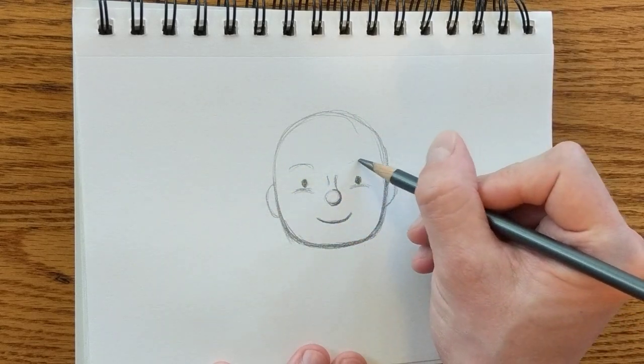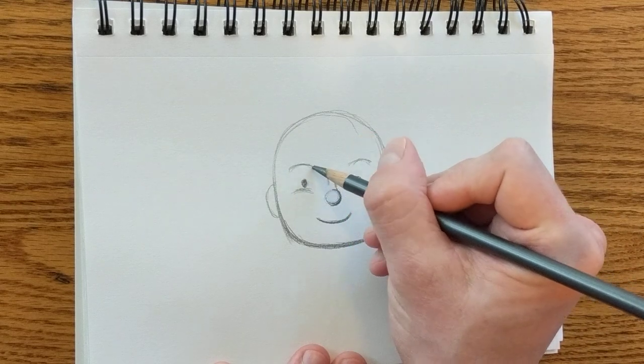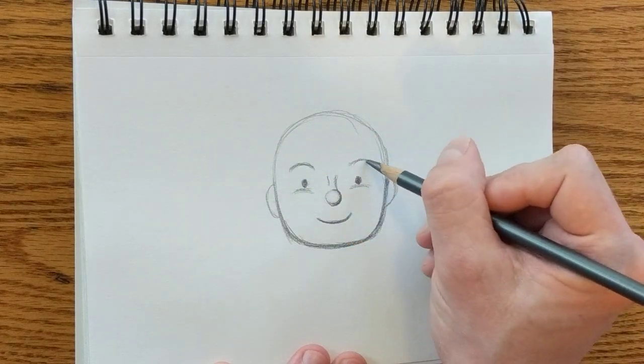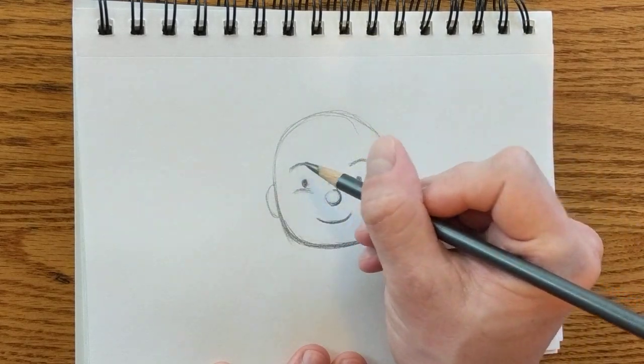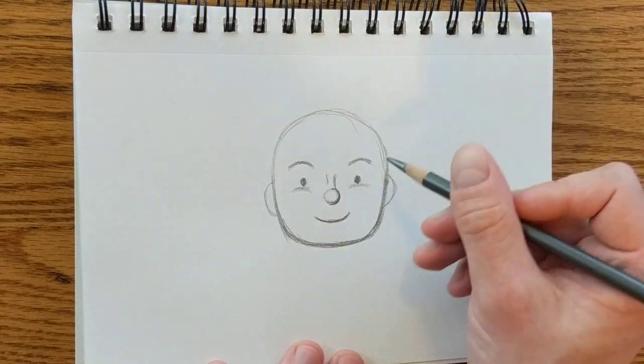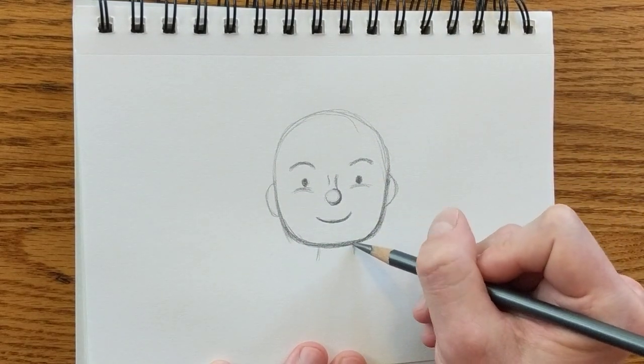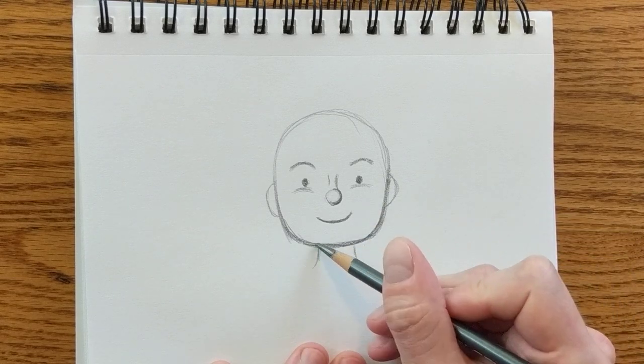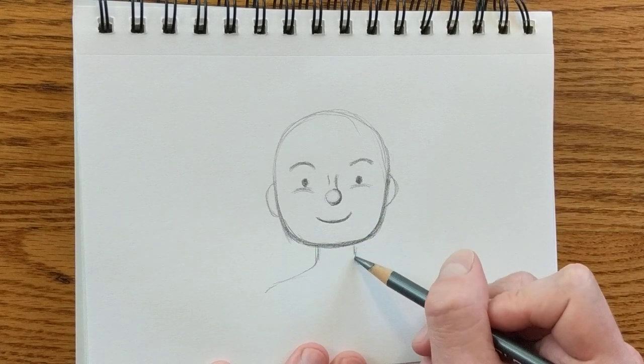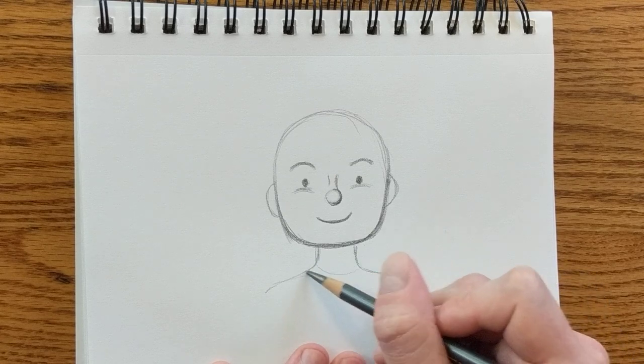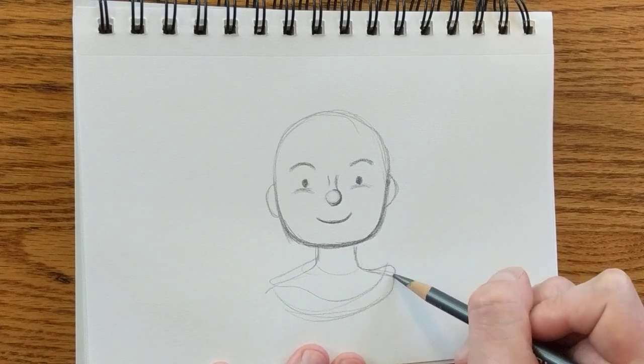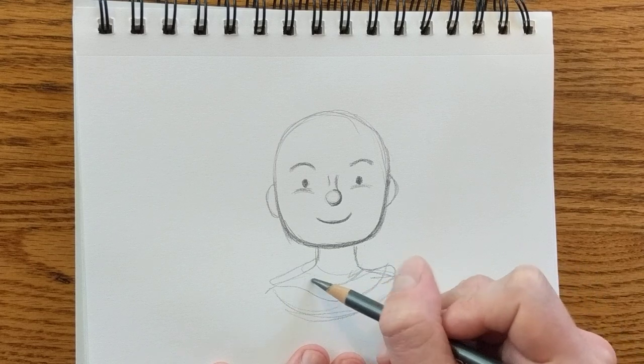I'm going to just lightly sketch in where I think his ears are going to be. But we probably won't actually see them once he's wearing his mask. And then this is about where his eyebrows would be. In a lot of cases, eyebrows are just a nice little simple curve like that. For him, I'll give him a little neck.